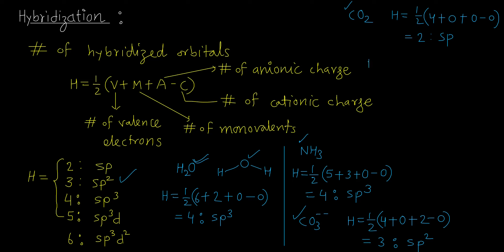Next example: PCl₅, phosphorus pentachloride. The central atom is phosphorus (electronic configuration 2,8,5), so v = 5. Chlorine is monovalent, so m = 5. a = 0, c = 0. So H = ½(5 + 5) = ½ × 10 = 5. Five hybridized orbitals means the hybridization is SP3d.